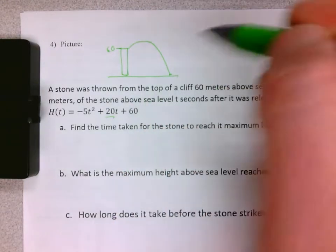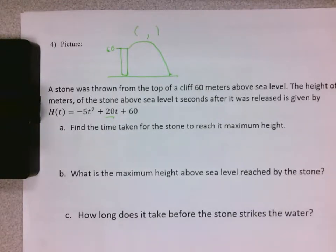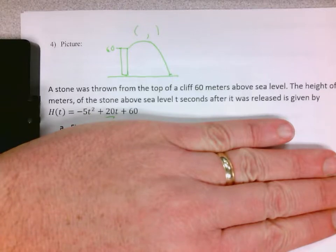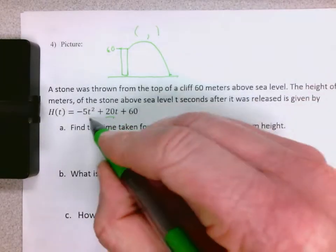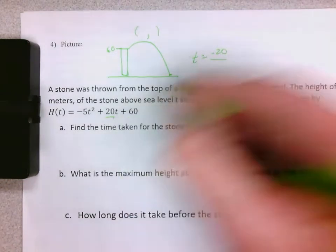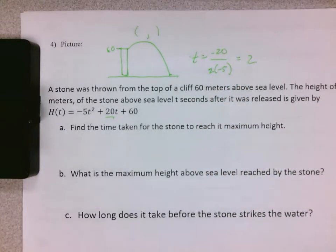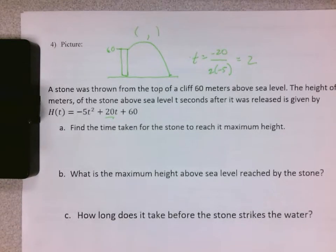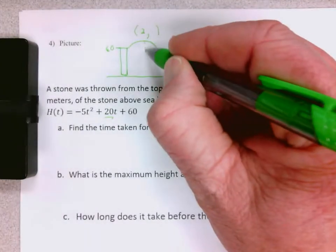Important things on my picture: I'm going to find the vertex right away. I'm not even reading through the question - I know I'm going to find the vertex, so let's go ahead and find the vertex and put it on our picture. So x equals negative b over 2a, or t equals negative 20 over 2 times negative 5, so it comes out nice to 2. At 2 seconds we reach the height.